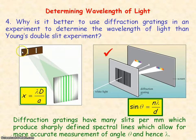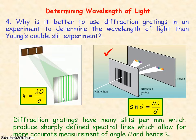Diffraction gratings are better for determining the wavelength of light than Young's double slit experiment, which gave only an approximate value of wavelength because the fringes were not sharply defined. Diffraction gratings give sharply defined spectral lines, allowing accurate measurements of the different diffraction angles for different colours of light, and hence accurately determining the different wavelengths for different colours.